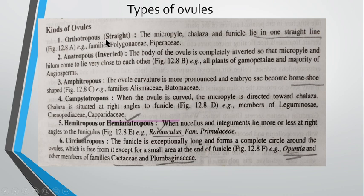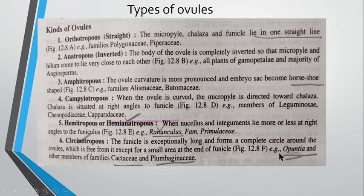You should remember the definition of each kind of ovule — through the diagrams in the previous slide you can draw them, which will be sufficient for the types of ovule. Hemitropous or hemianatropous — when the nucellus and integuments lie more or less at a right angle to the funiculus — example: Ranunculus. Circinotropous — example: family Cactaceae, or Opuntia.